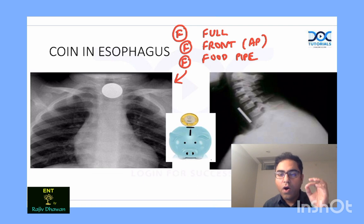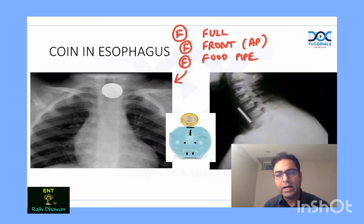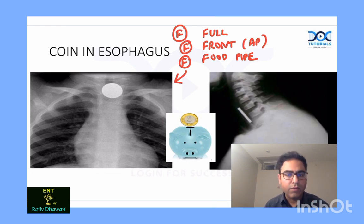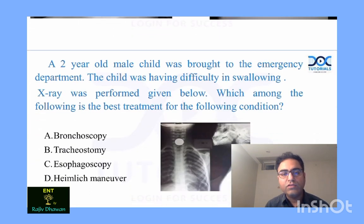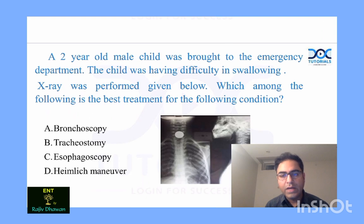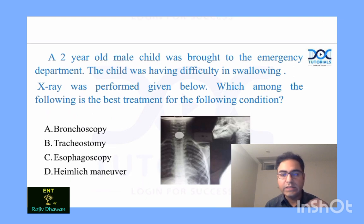So this is a case of an ingested foreign body where the foreign body is in the esophagus, right at the cricopharyngeal sphincter area, at approximately the C6 level. In this case, you need to perform a rigid esophagoscopy to remove the coin.